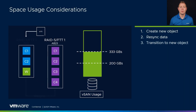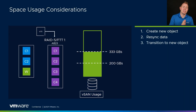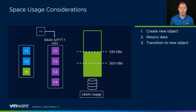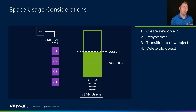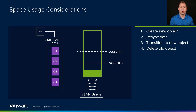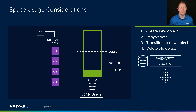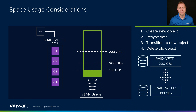Once the re-sync completes, we'll transition over to the new object — in this case, AB23. We'll then delete the old object. As a result, we'll reduce our storage consumption down from 333 gigs down to 133 gigs.